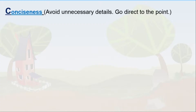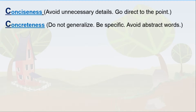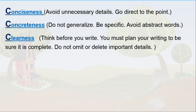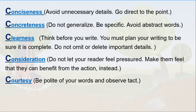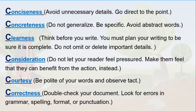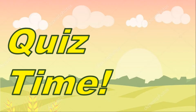Qualities of effective written communication: be concise — avoid unnecessary details and go directly to the point. Be concrete — do not generalize; be specific and avoid abstract words. Be clear — think before you write; plan your writing to ensure it is complete and do not omit important details. Be considerate — do not make your reader feel pressured; make them feel they can benefit from the action. Be courteous — be polite with your words. Observe correctness — double-check your document for errors in grammar, spelling, format, and punctuation.